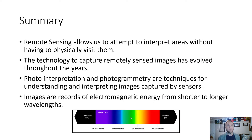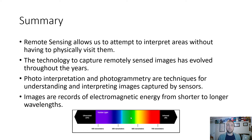In summary, remote sensing allows us to attempt to interpret areas without having to physically visit them — it's about sensing locations that are remote or distant from the viewer. The technology to capture remotely sensed images has evolved throughout the years and will continue to evolve. Photo interpretation and photogrammetry are techniques for understanding and interpreting images captured by sensors: photogrammetry is more of a science and more objective, while image interpretation is more of an art and more subjective. Images are records of electromagnetic energy from shorter to longer wavelengths. Thank you for tuning in to this week's lecture — I look forward to chatting with you all soon.